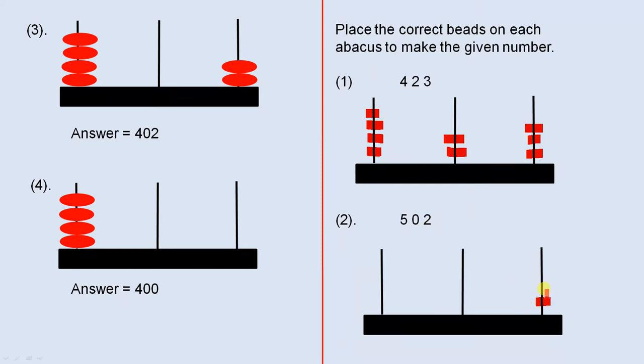502, 2 ones, no tens, 500. 1, 2, 3, 4, 5. So that's 500, no tens, 2 ones.